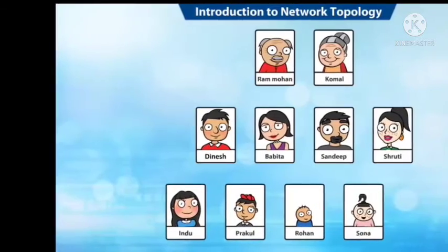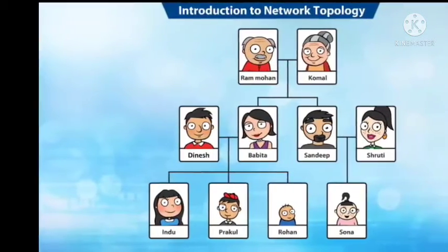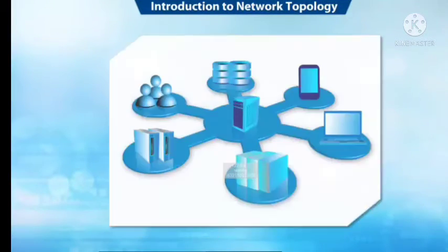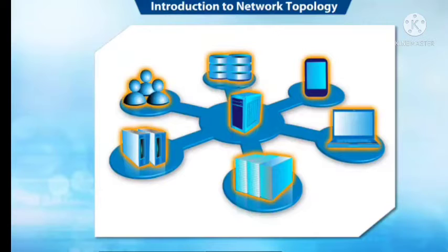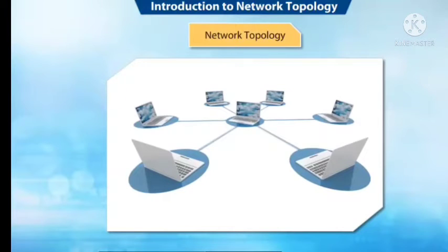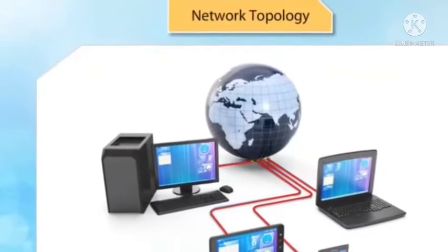Look at this family picture — in a family, grandparents are the central characters and every individual in the family is connected to them. Network topology is similar to a family where the server is the central character and other devices are the family members connected to it. If you go to your computer lab, you will find all the computers connected through cable. This is called network topology — it is the structure or layout in which components such as cables, computers, etc. are connected together in a network.